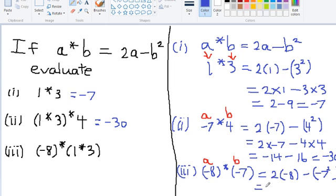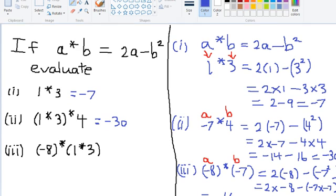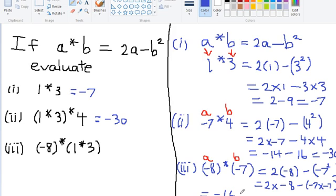So this will be 2 times negative 8, subtract negative 7 times negative 7. This will give us negative 8, subtract negative 8, subtract 9. What is our final answer? Our final answer would be negative 9, just negative 9.